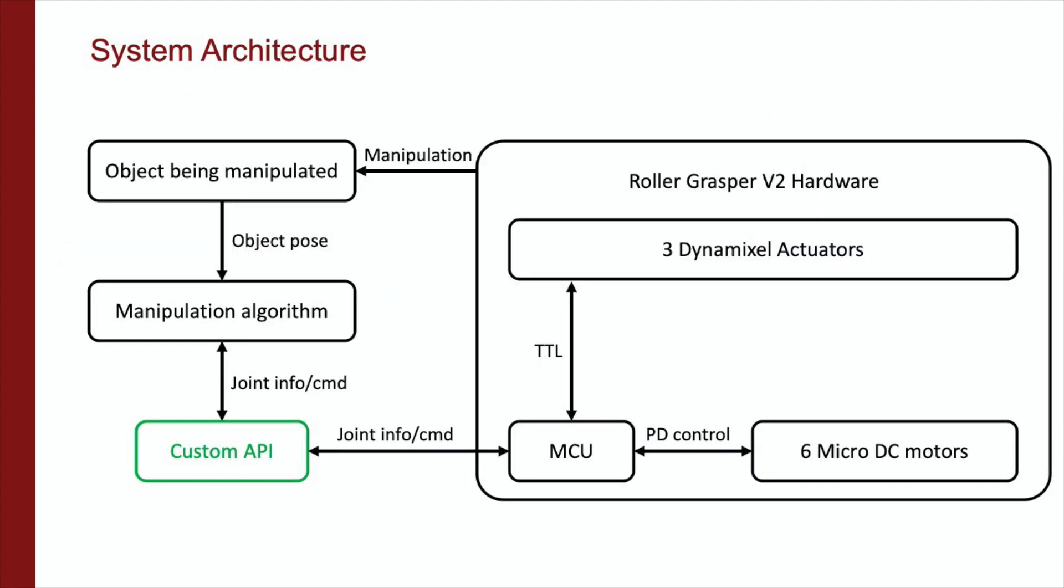A custom API was developed to interface between the low-level information and the manipulation algorithm. Information transferred during the bidirectional communication includes the positions for each joint of the fingers, the current limit of the base joint, as well as the control parameters for controlling the motors. A microcontroller is used to handle the communication with the manipulation algorithm as well as low-level control of the motors.